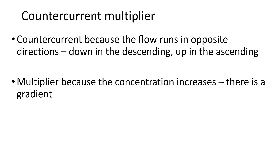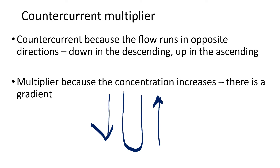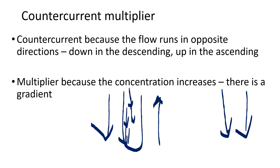Why is it called a countercurrent multiplier? It's called countercurrent because the Loop of Henle runs counter current - one limb moves down as the other moves up, so they run in opposite directions. Con-current means flowing in the same direction; counter means opposite. It's called a multiplier because as you move down you're getting more and more concentrated - increasing the salinity, increasing the concentration.